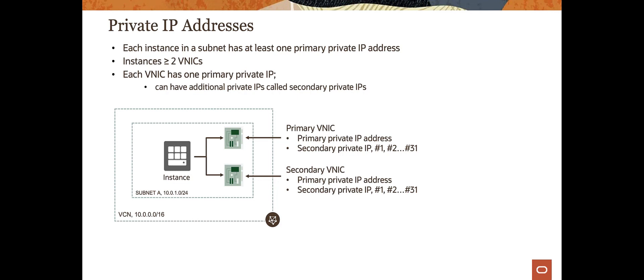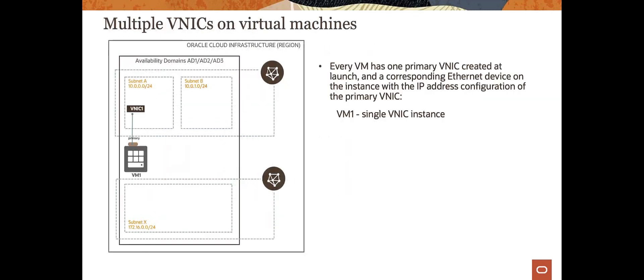Although all instances by default have primary or secondary private IP addresses, you can also assign public IP addresses to them as well. The important thing to understand is that VNICs exist and this is an important way to designate connections, as well as what we'll talk about with security.